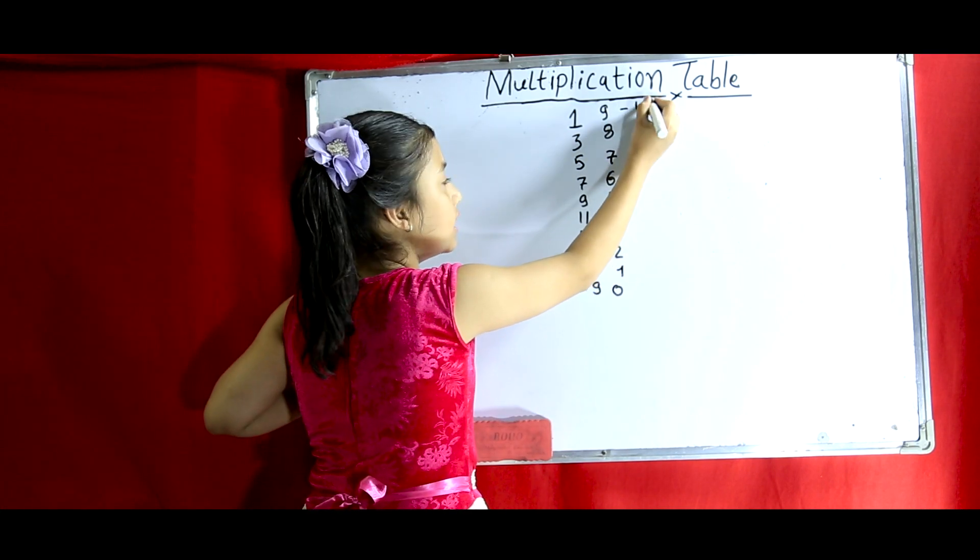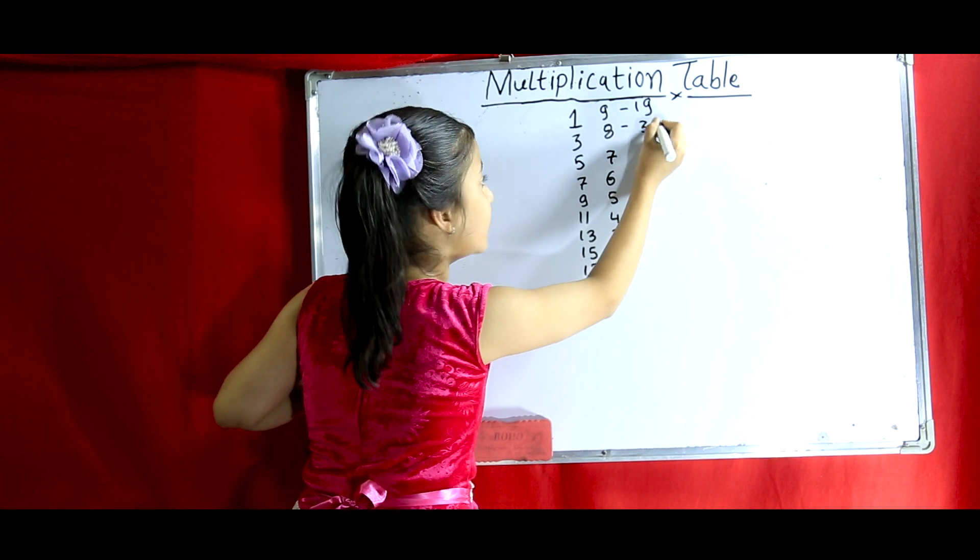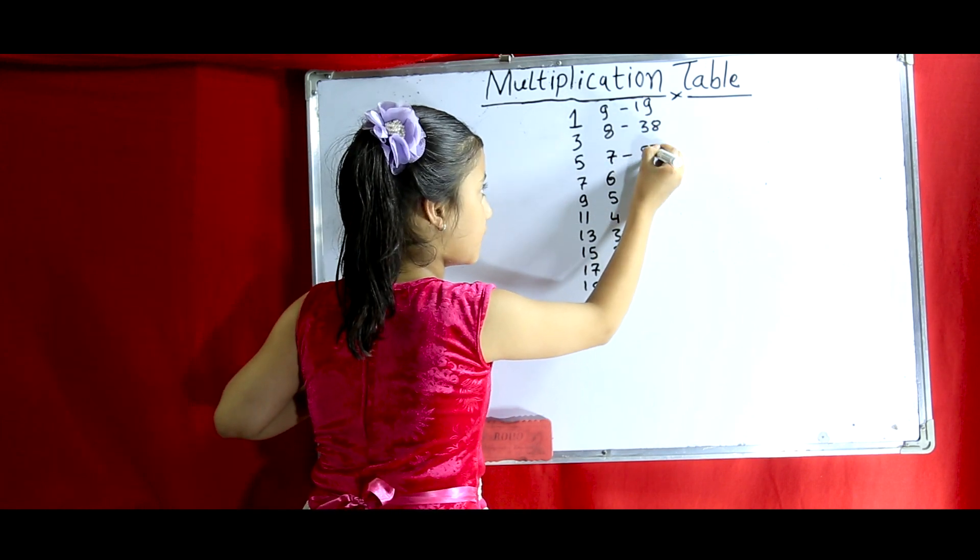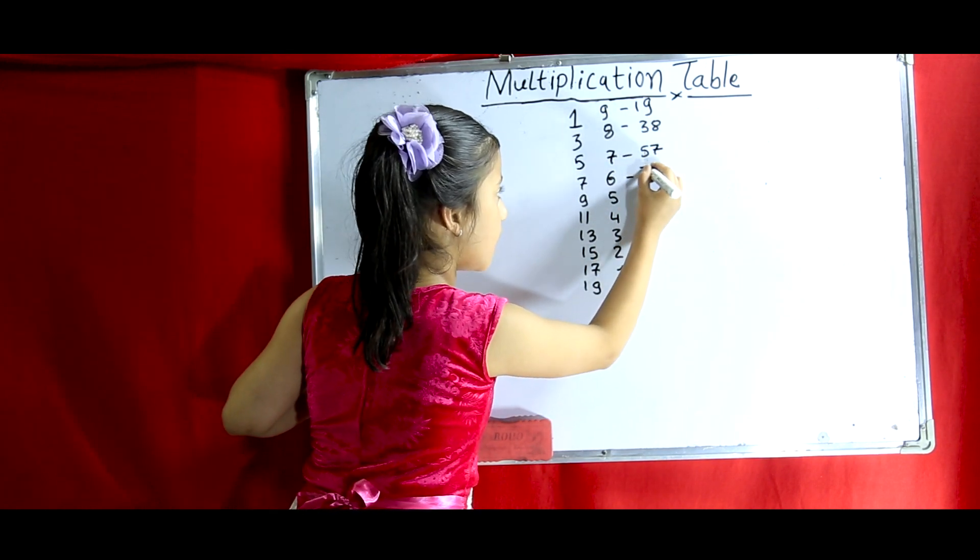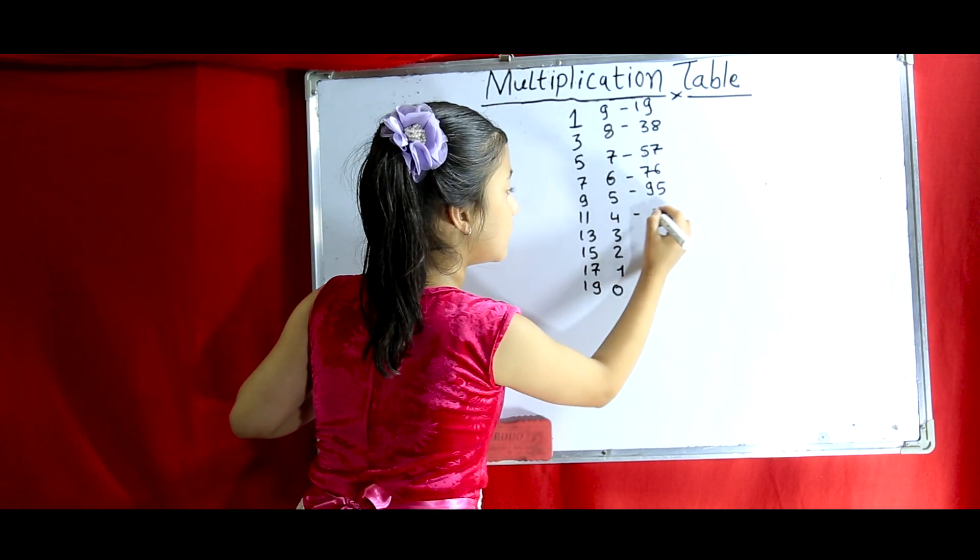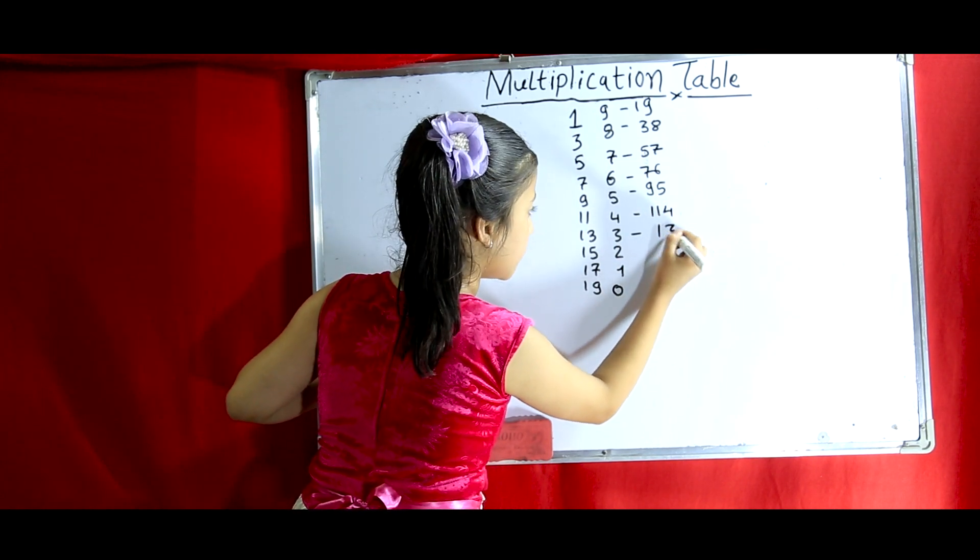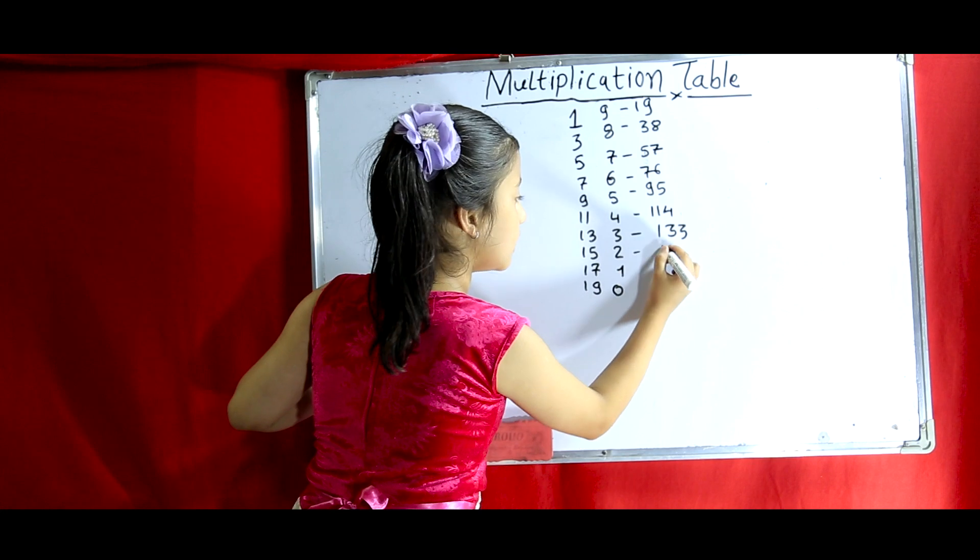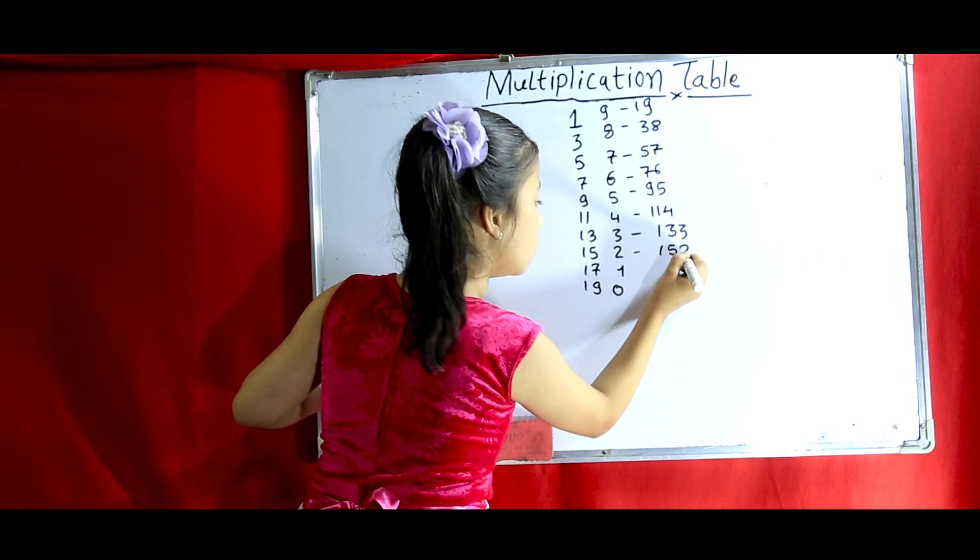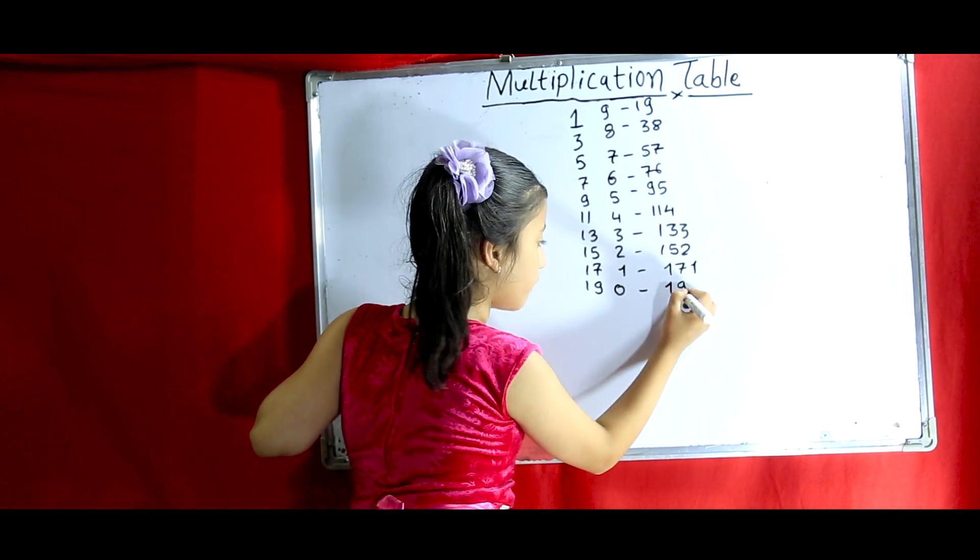So let's write it. 19 1s are 19, 19 2s are 38, 19 3s are 57, 19 4s are 76, 19 5s are 95, 19 6s are 114, 19 7s are 133, 19 8s are 152, 19 9s are 171, 19 10s are 190.